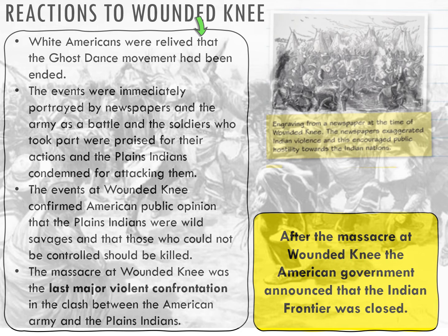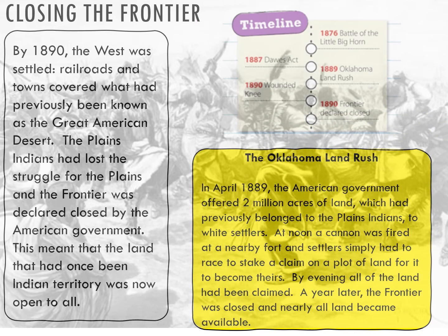With that, you have the closure officially and legally of the Indian frontier. By 1890, the West is settled, the Plains is filled, railroads and towns are covering that great American desert. Plains Indians had lost the struggle for the plains and the frontier, which means the land that they had once held as Indian territory was now open to everyone. We see a land rush in the late 1880s — two million acres of land previously belonging to the Indians is now basically come-and-get-it, offered to white settlers, and it's settled pretty much instantly within 24 hours.